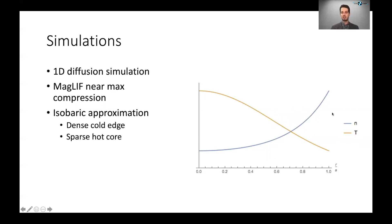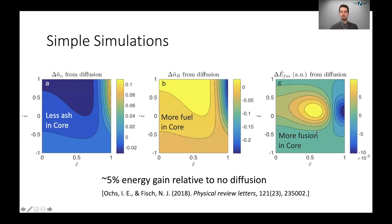So we did simple 1D diffusion simulations, and here I'm showing the change in the helium concentration and the fuel concentration due to the fact that we have this magnetized transport effect compared with the case of no diffusion. So you find that compared to a case of no diffusion, you have less ash in the core, as you'd expect. So alpha particles are another name for helium, so this N alpha is the ash concentration. You find that you have more fuel in the core, and as a result, you have more total fusion energy in the core.